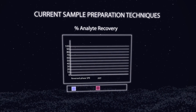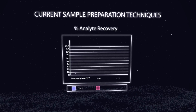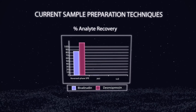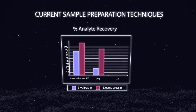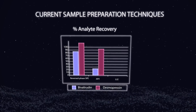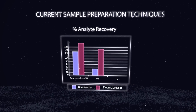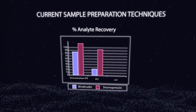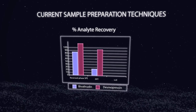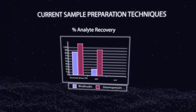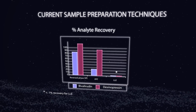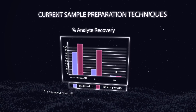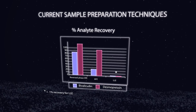So the results are in. Looking at analyte recovery for the two peptides — bivalirudin and desmopressin — we can see that with reversed phase SPE and protein precipitation, desmopressin had fairly decent recovery. For bivalirudin, we got good recovery with reverse phase but not with protein precipitation. With liquid-liquid extraction, we had less than 1% recovery for either peptide, so no success there.